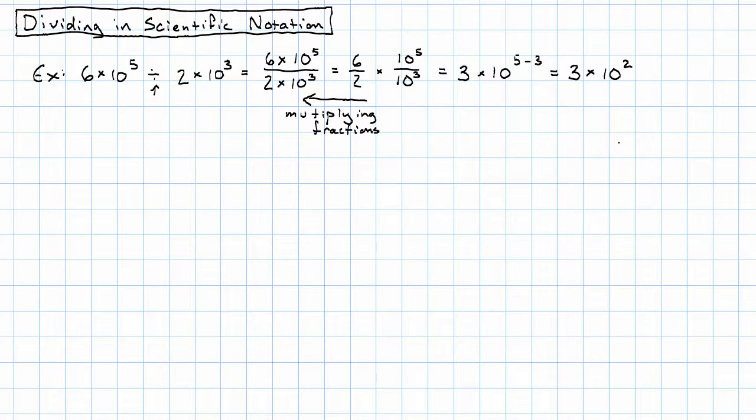Let's make sure that that really worked before we write down the rules. 6 times 10 to the fifth, that's just 6 followed by 5 zeros. So 600,000 divided by 2 times 10 to the third, that's 2,000. And I'm claiming that that gives me 300.